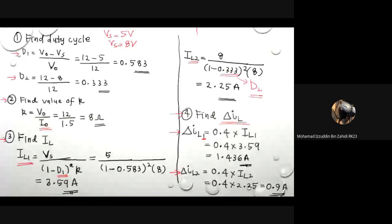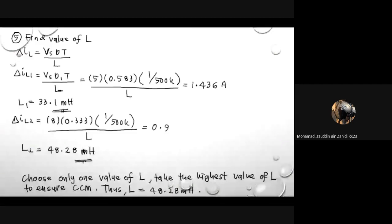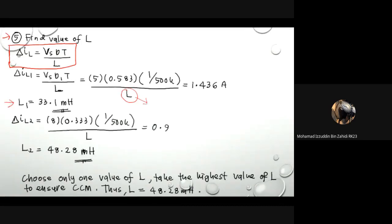Step 5 — find the value of the inductor using the ΔIL equation. Since we have two ΔIL values, we get two inductor values. Substitute into the ΔIL equation: Vs, D1, T = 1/500k. L1 = 33.1 millihenry. For the second, using D2 and ΔIL2: L2 = 48.28 millihenry.